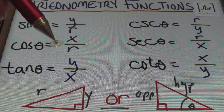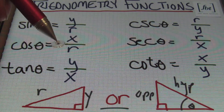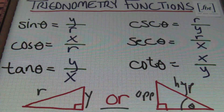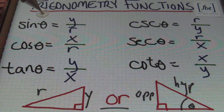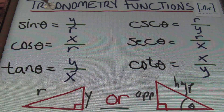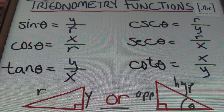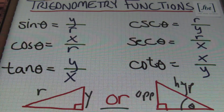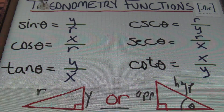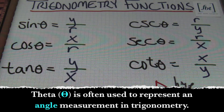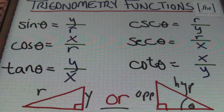Tan theta equals to y over x. Theta — this Greek letter — just stands for the measurement of an angle. So it can be replaced with a variable x or whatever variable they want to use, but anytime you see theta in a problem in trigonometry, they're referring to an angle measurement, and that's it.